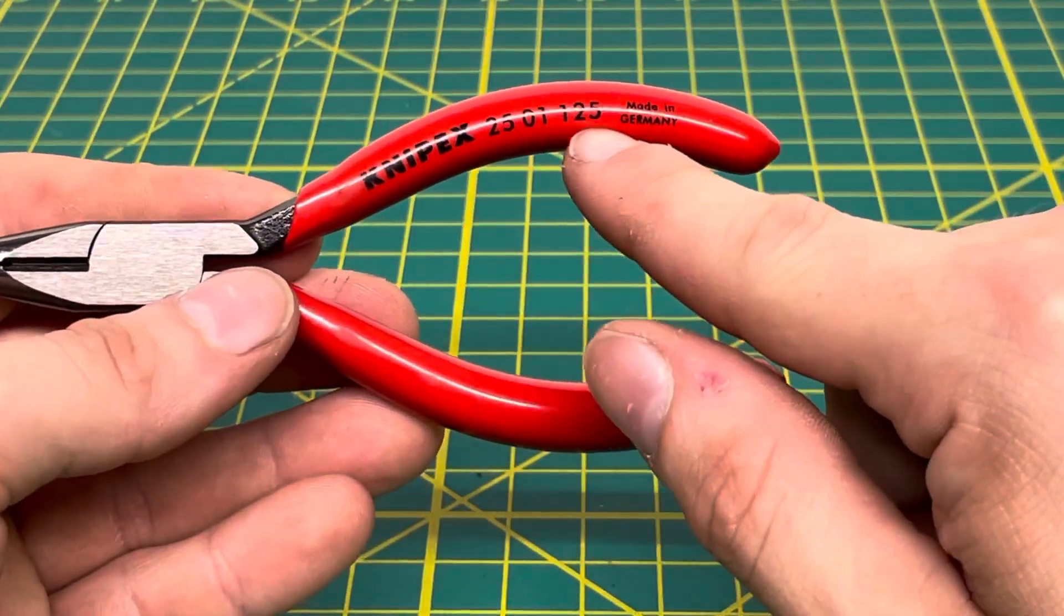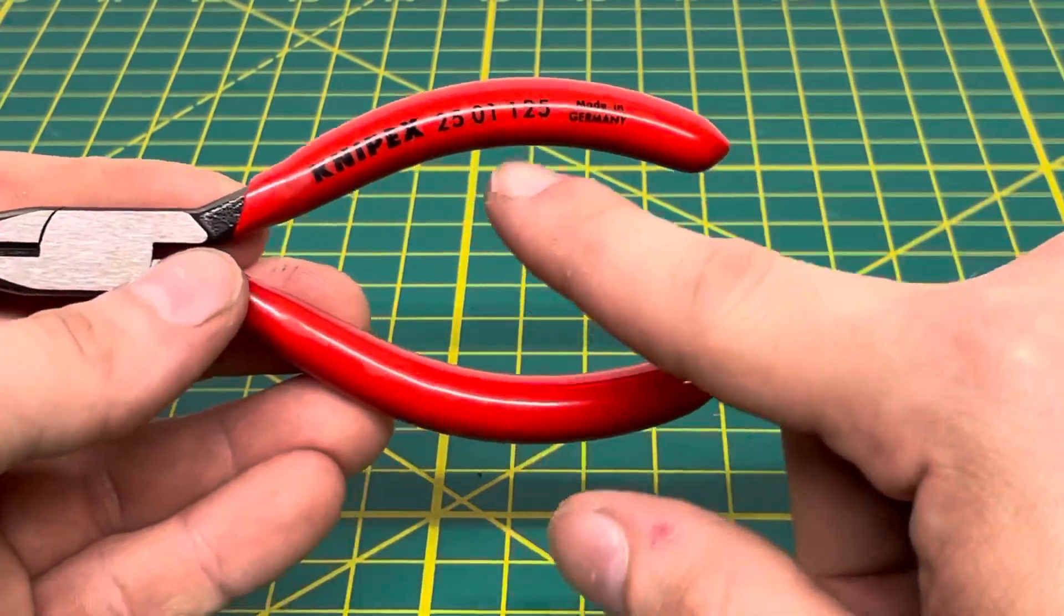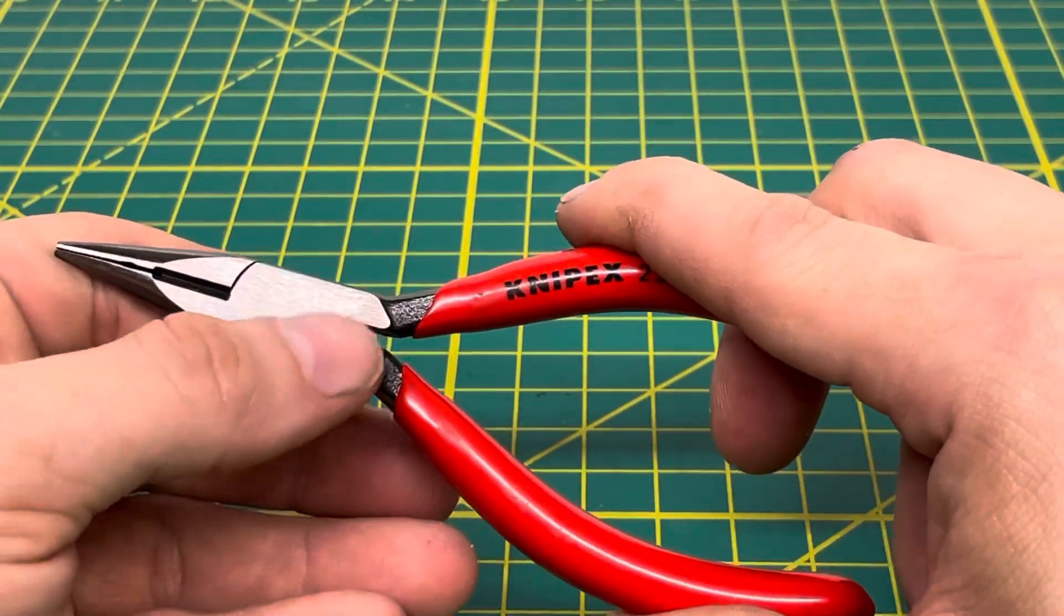Being Knipex, this tool is made in Germany as you can see stamped on there. Now this plier being so small, there is nothing laser etched onto the front surface of the plier.